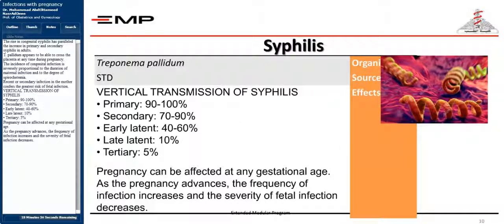The rise in congenital syphilis has paralleled the increase in primary and secondary syphilis in adults. Treponema pallidum appears to be able to cross the placenta at any time during pregnancy. The incidence of congenital infection is inversely proportional to the duration of maternal infection and the degree of spirochetemia. Recent or secondary infection in the mother confers the greatest risk of fetal infection. Vertical transmission rates are: Primary 90–100%, Secondary 70–90%, Early latent 40–60%, Late latent 10%, Tertiary 5%. Pregnancy can be affected at any gestational age; as pregnancy advances, the frequency of infection increases but the severity of fetal infection decreases.